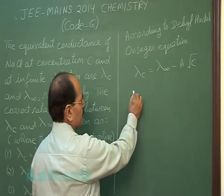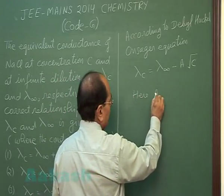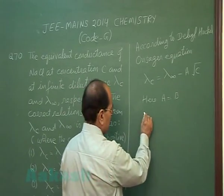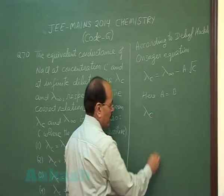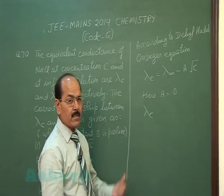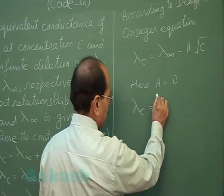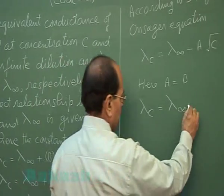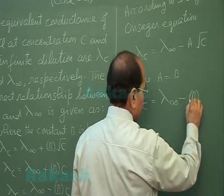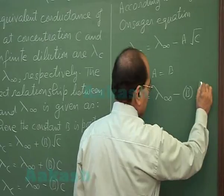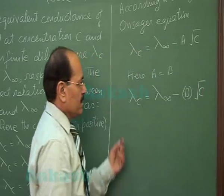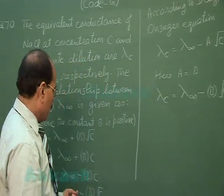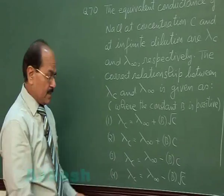Here, constant A is equal to constant B. So the correct relationship between equivalent conductance of sodium chloride as given in this problem is related to this constant. Of the four options given, the fourth option is the correct answer.